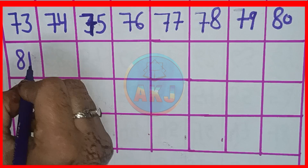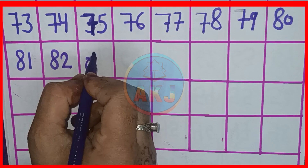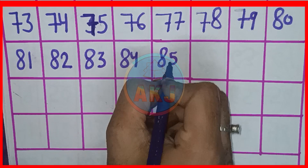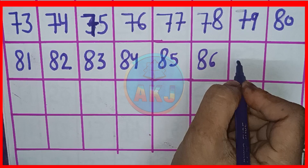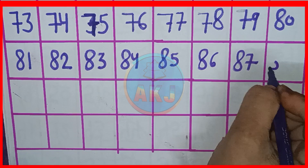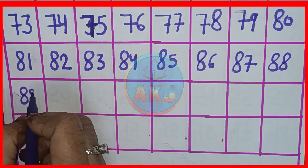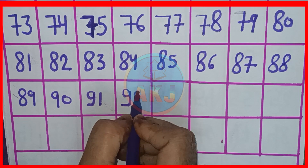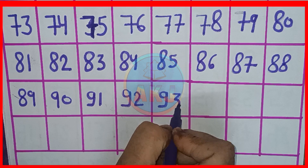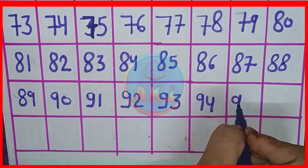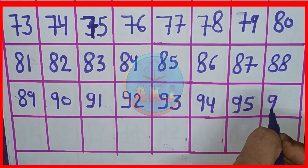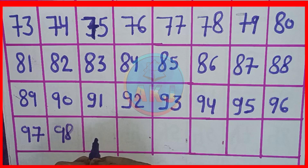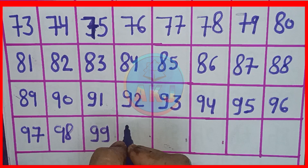81, 82, 83, 84, 85, 86, 87, 88, 89, 90. 91, 92, 93, 94, 95, 96, 97, 98, 99, and 100.